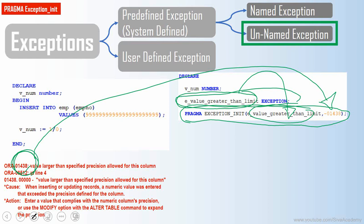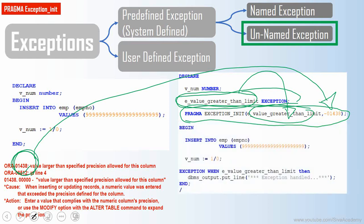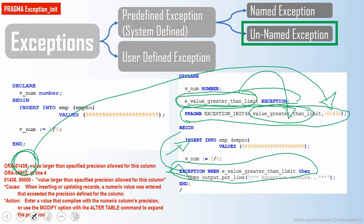Once you have associated a name to an unnamed exception, you can handle it as if it were a named exception — instead of using the OTHERS category. Whenever the INSERT fails with that particular unnamed exception, control is automatically transferred to the named exception handler. If you haven't handled it with the specific name, it will fall through to OTHERS. If there is no exception handling at all, the exception will be thrown back to the caller.